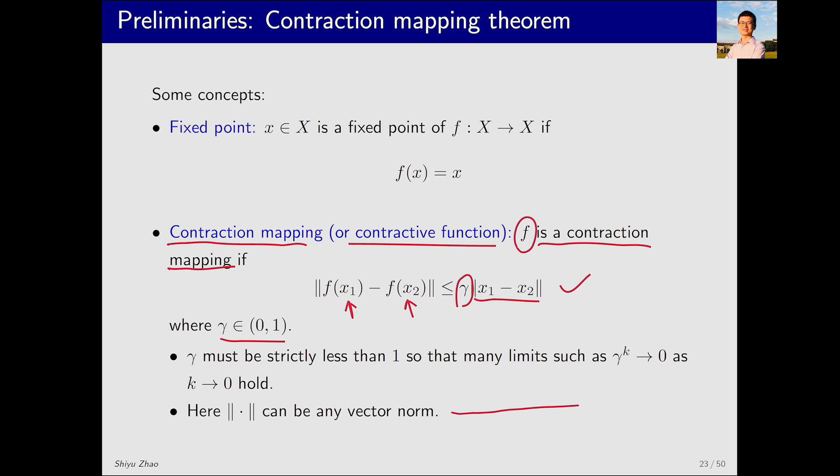What is the intuitive interpretation? Let's consider a very simple one-dimensional case. Suppose this is x1 and this is x2, then f(x1) might be here and f(x2) here, so x1 is mapped here and x2 there. This inequality implies that the distance between f(x1) and f(x2) is smaller than their original distance, which is why it's called contractive.